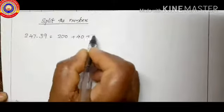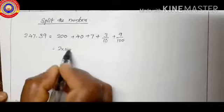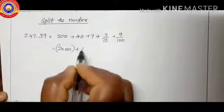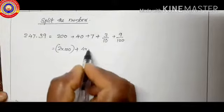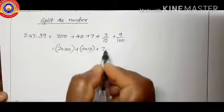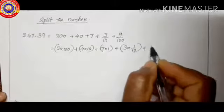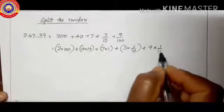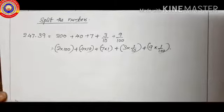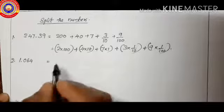Next we shall do some problems. 247.39 equals 200 plus 40 plus 7 plus 3 by 10 plus 9 by 100, which is equal to 2 into 100 plus 4 into 10 plus 7 into 1 plus 3 into one-by-ten plus 9 into one-by-hundred.